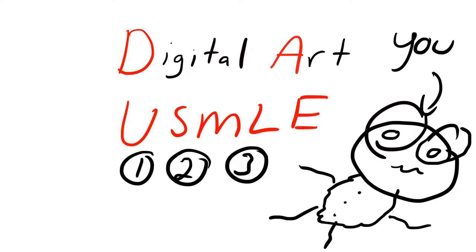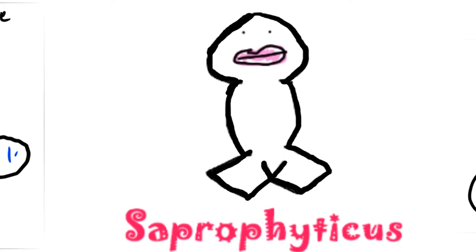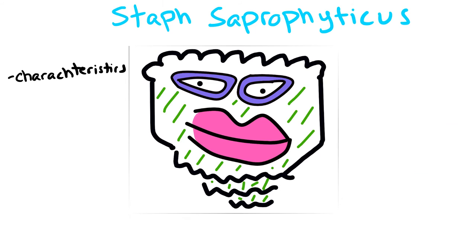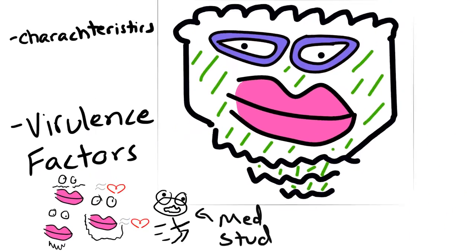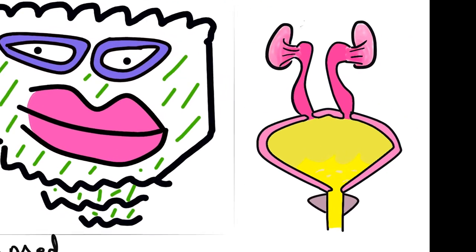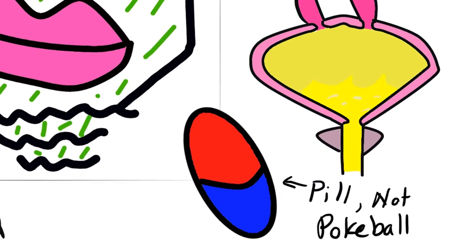Yo what's up guys, welcome to Digital Arts USMLE. Today we're going to continue with our microbiology, specifically covering Staphylococcus saprophyticus, its characteristics, virulence factors, the organ systems affected by it, and the treatment options based on the type of infection.